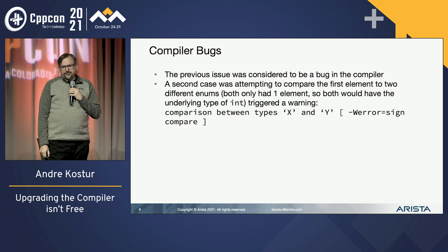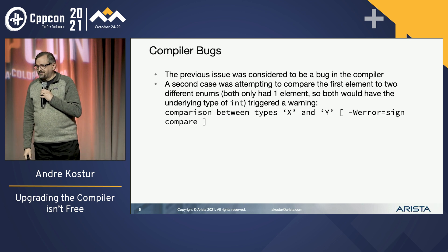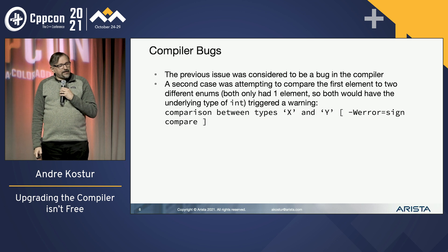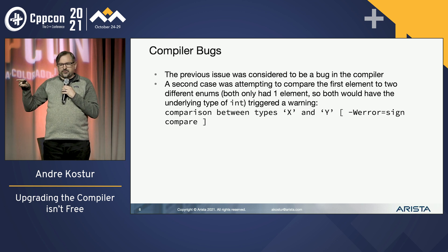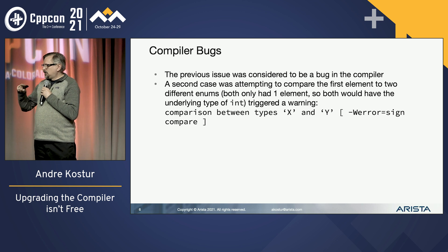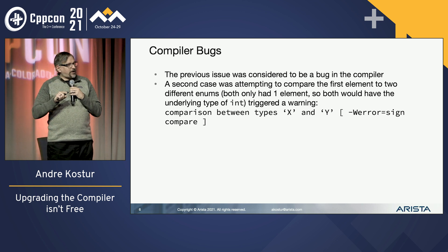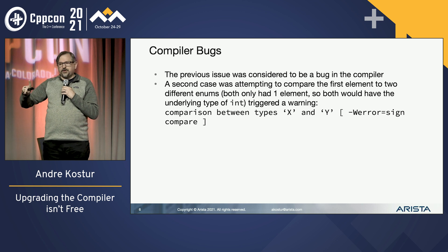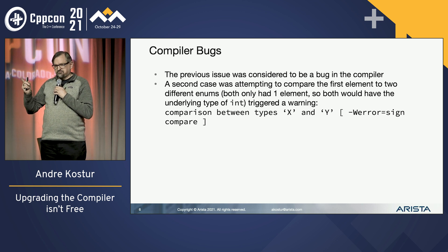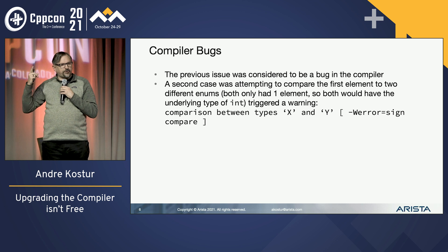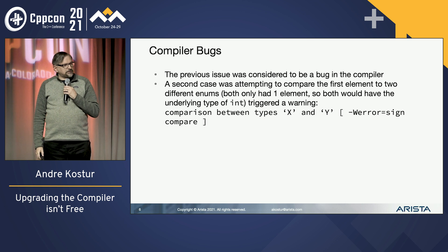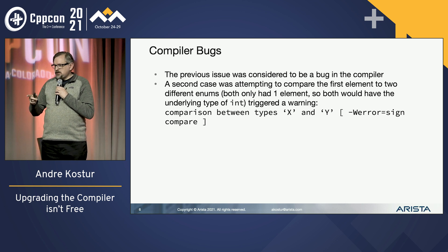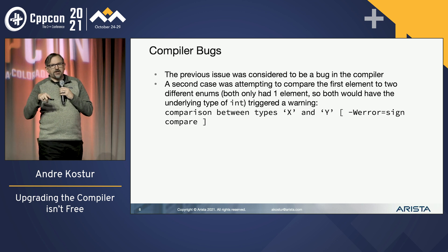After undefined behavior, you may run into outright compiler bugs — they exist. One we hit was the optimizer. Another we hit: we had two enums, straight-up standard C enums, that we tried to compare two values between them, and the compiler came up with two warnings. One was that we were comparing two enums of different types — a perfectly valid warning, and remember we turned all warnings into errors. The second was a sign mismatch. But it's a C enum, they're both int — where's the sign mismatch coming from?